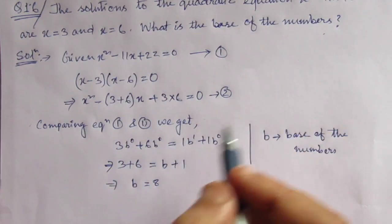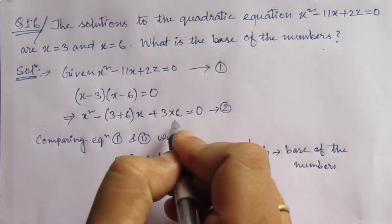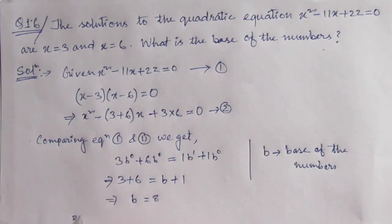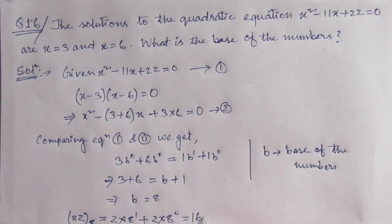Now we will verify that 22 in octal should be equal to 18 in decimal. 22 in octal equal to 2 into 8¹ plus 2 into 8⁰ equal to 16 plus 2 equal to 18. So this is in decimal.